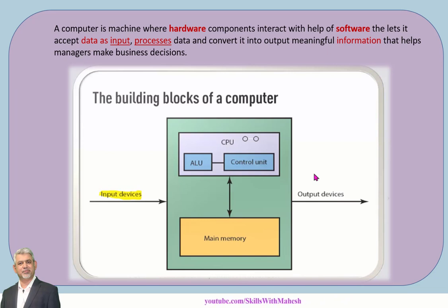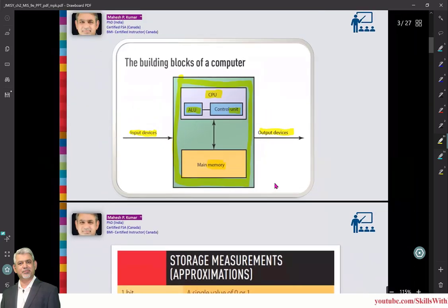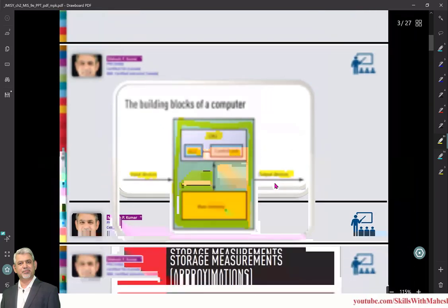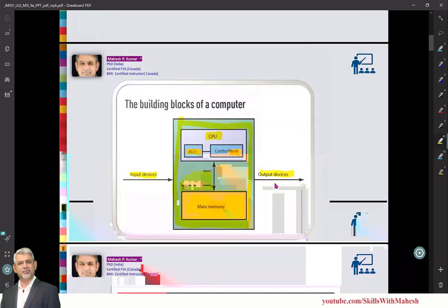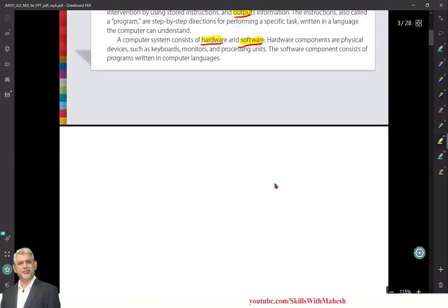Input devices, then there is processing happening under CPU. CPU has things like memory, ALU arithmetic and logical unit, control unit, and then there are output devices. These are abstract diagrams. This is computer system. Now maybe we should visualize it more.